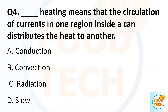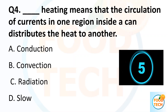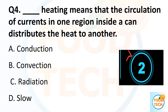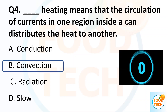Question 4. Dash heating means that the circulation of a current in one region inside a can distributes the heat to another. A. Conduction. B. Convention. C. Radiation. D. Slope. Answer B. Convention.